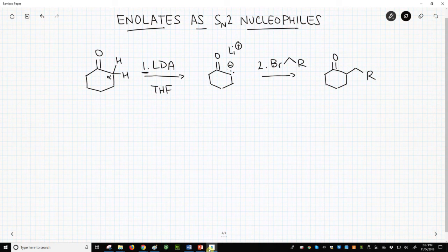So here is our alpha carbon and there are hydrogens. LDA, will just write B minus, removes a proton to give the enolate. With LDA, this step will always be its own numbered step.